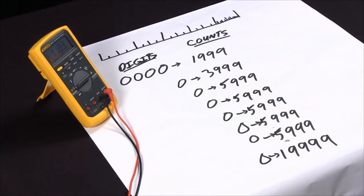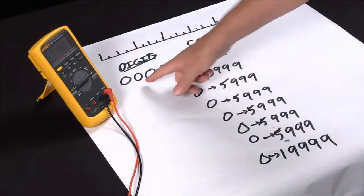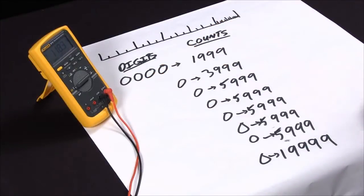With multimeters, we talk about digits and counts. The digits are what's in the display, the numbers you see on the display. The counts is how far it can count up.